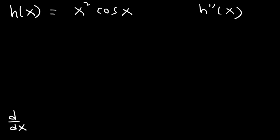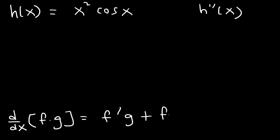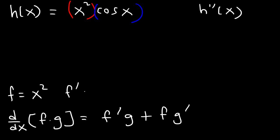The derivative of f times g is going to be the derivative of the first part, f prime, times the second part, plus the first part times the derivative of the second part. So we could say that f is x squared, and g is cosine. So if f is x squared, f prime has to be 2x. And if g is cosine, g prime — the derivative of cosine — is going to be negative sine.